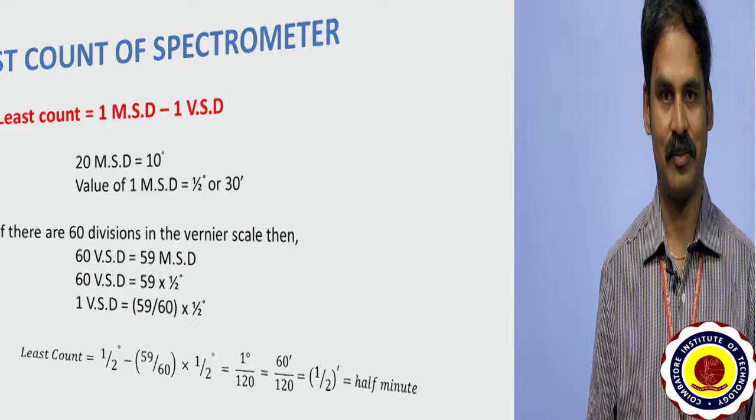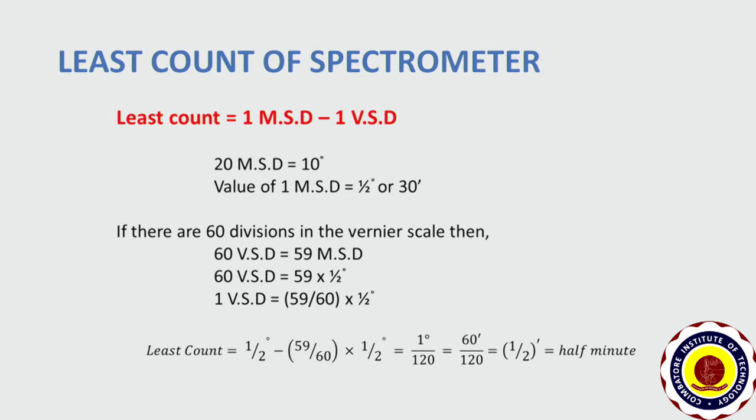Least count means the minimum possible measurable value by the instrument — that is what we are calling least count. We will see how to calculate least count for the spectrometer. The least count will be equal to 1 main scale division minus 1 vernier scale division.